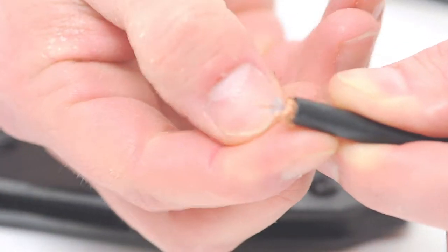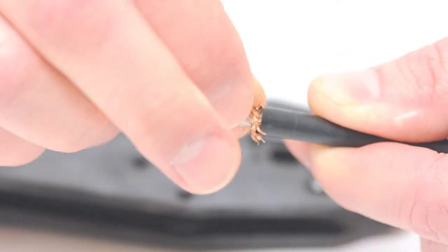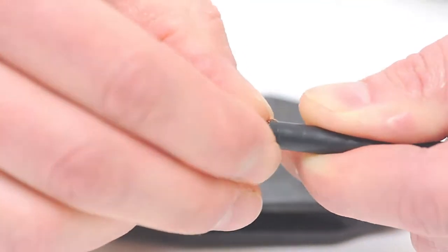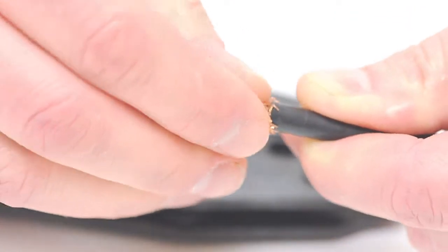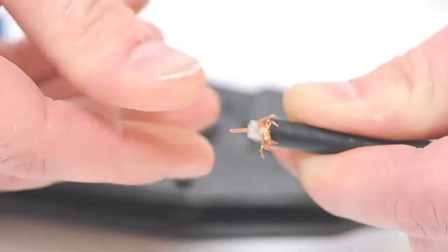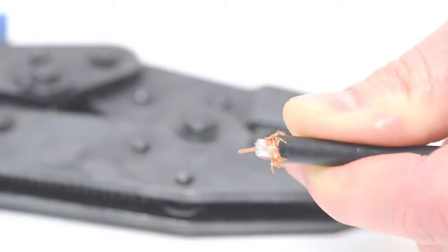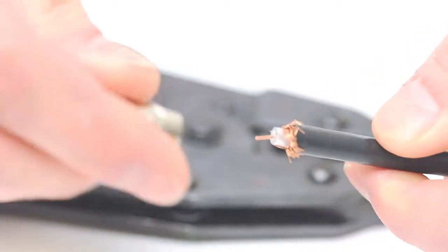Using your hands, fold back the braided shield on top of the jacket, and slide the ferrule over the braid and the jacket.